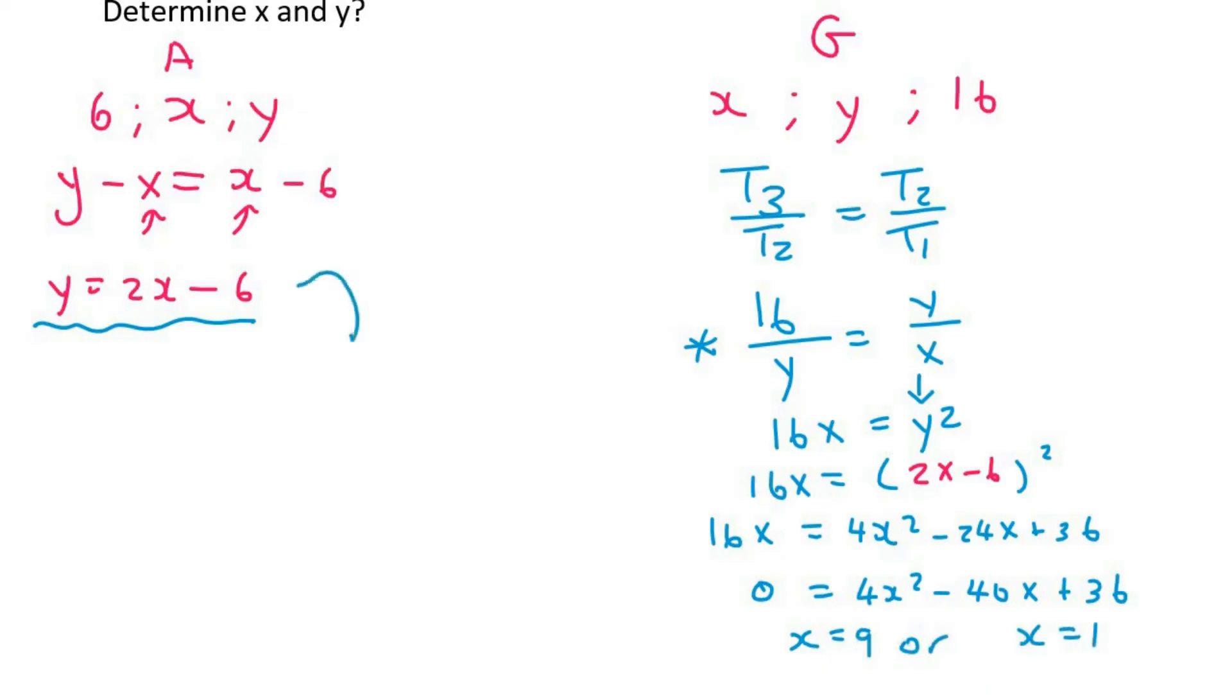So now what we do is we come find the y values. So if x equals 9, then y would be equal to 2 times 9 minus 6, which is 12. And then if x is equal to 1, then y would be 2 times 1 minus 6, which is negative 4.